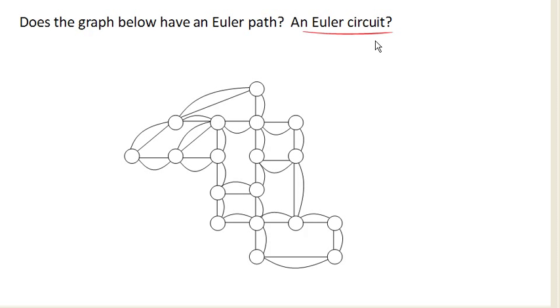So the snowplow would have a route where it could drive over every street twice, right? Once in one direction, once in the other direction. It could drive over every street twice and get back to the starting point.